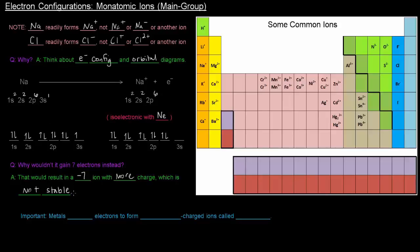Sodium is a metal, and metals all tend to lose electrons to form positively charged ions called cations. A cation is just a term for a positively charged ion.